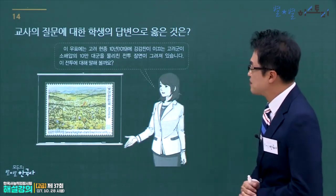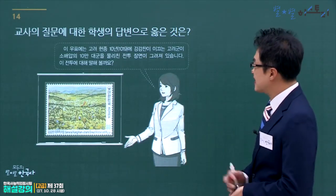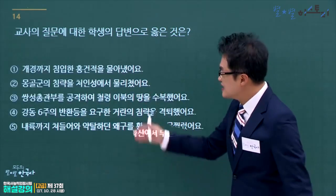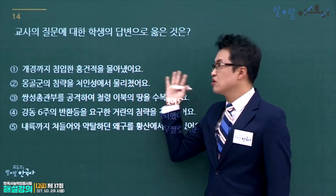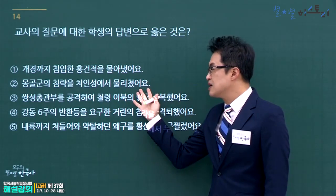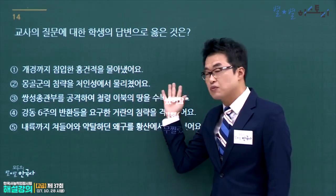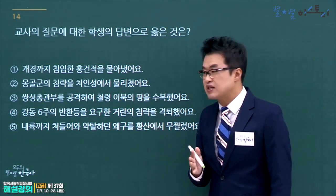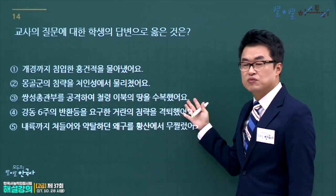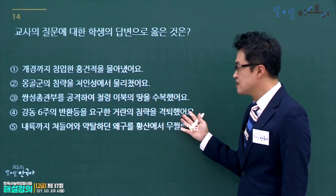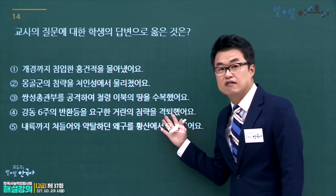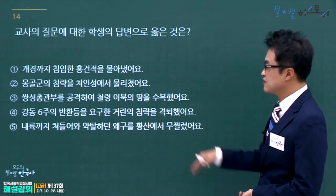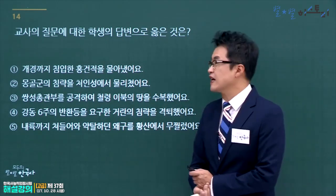강감찬과 거란의 싸움인 귀주대첩이 배경입니다. 거란 3차 침입과 관련된 설명을 고릅니다. 계령까지 침입한 홍건적은 고려 후기, 몽골군 침략과 처인성 전투도 고려 후기입니다. 거란·여진·몽골·홍건적·왜구의 순서로 외침이 이어졌습니다. 쌍성총관부는 공민왕 때 회복, 강동 6주 반환을 요구한 것이 거란 침입 격퇴 관련 내용으로 정답은 4번입니다.